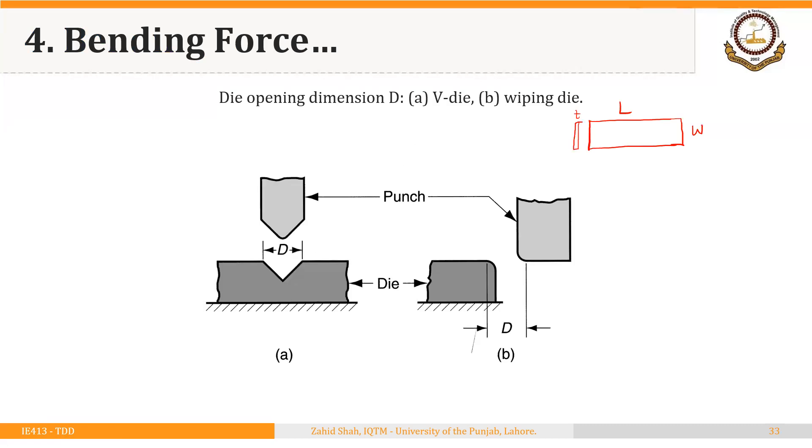Tensile strength can be found from the handbooks. And then is the D. So D is the size of the die opening. This is D in the case of V-bending.